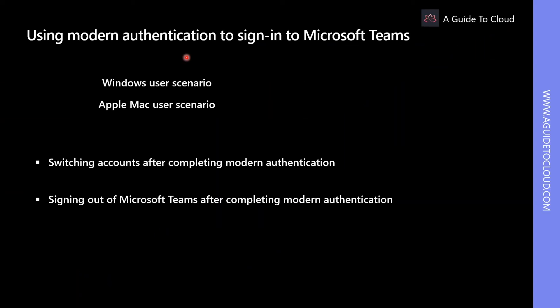Modern authentication is a process which provides the Teams application with verification that you have already entered your credentials — your work email and password — on some other app in Office 365. There are two options: Windows user scenario and Apple Mac user scenario. When you are signed into other Office 365 apps through your Office 365 Enterprise account and you start Microsoft Teams, you're going to be taken directly to the app — no need to enter the password.